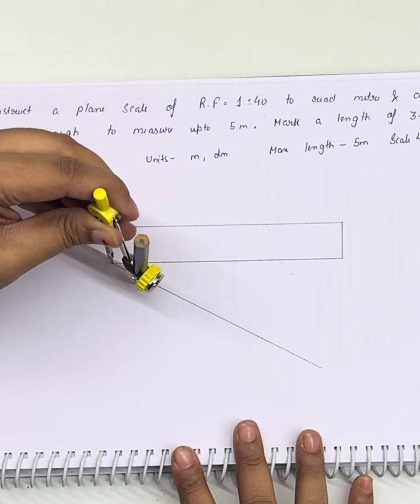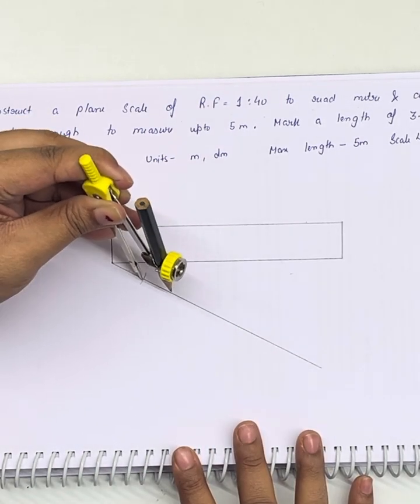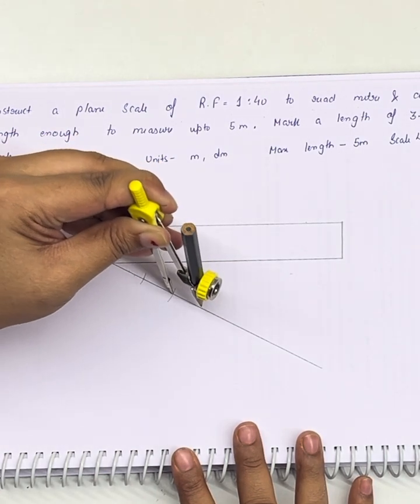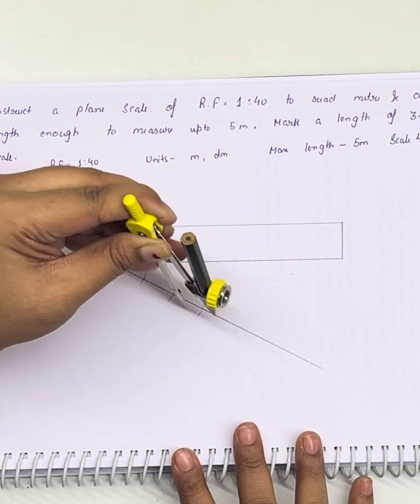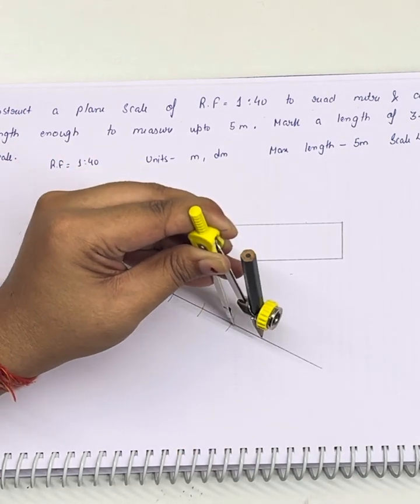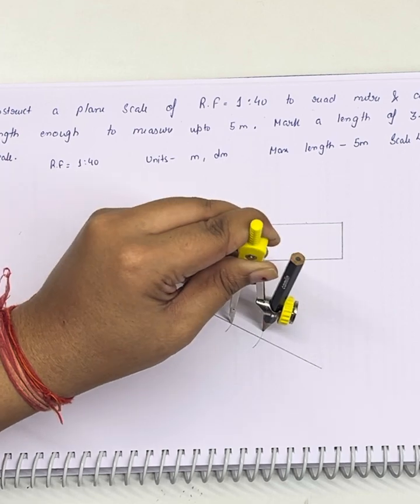We will be dividing this line in 5 parts. First cut, second, third, fourth, and fifth.